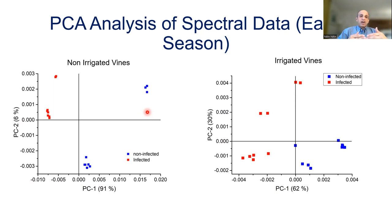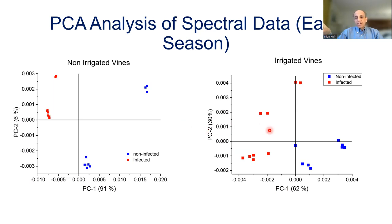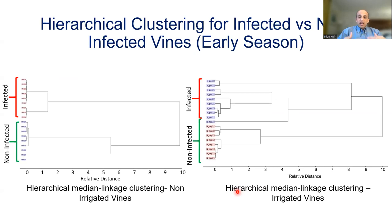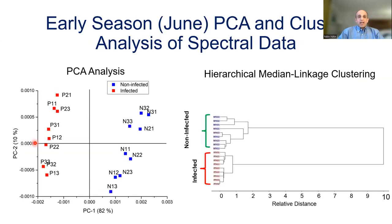Following this with PCA of spectral data, we can see differences between non-infected samples (indicated in blue) versus infected (indicated in red). Both in non-irrigated and irrigated vines, we were able to see differences between non-infected and infected vines based on the spectral data and PCA analysis. In the non-irrigated vines, PC1 — a single component — explained 91 percent of the differences, while in the irrigated vines, more than 60 percent of the difference was explained by the single component. Hierarchical clustering further confirms that spectral differences can discriminate the non-infected from the infected in the early season for both irrigated and non-irrigated samples.